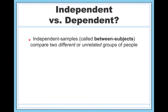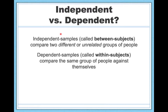The Independent Samples T-Test is a type of hypothesis test that's appropriate for between-subjects research designs — basically designs where you have two different or unrelated groups of people that you want to compare against each other. For example, when you're doing an experiment and you want to compare an experimental group with a control group.